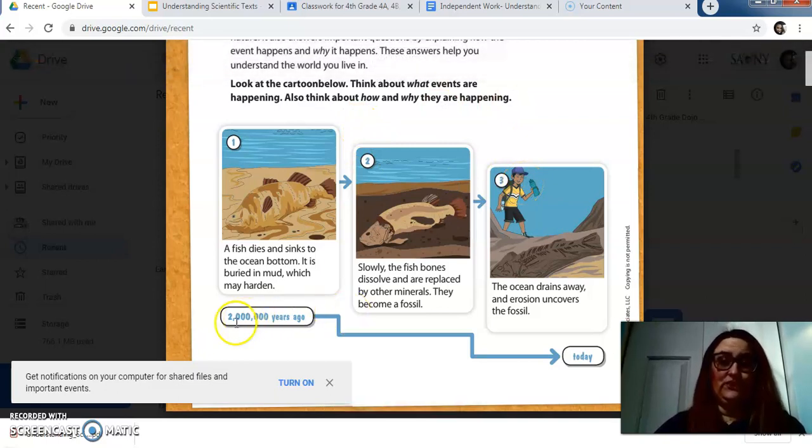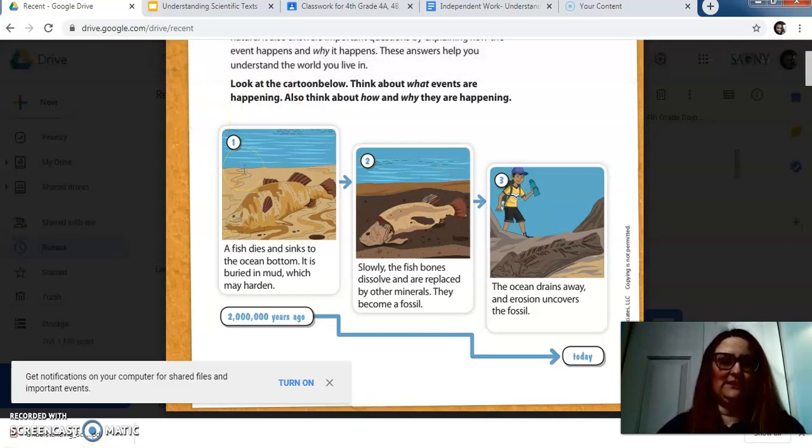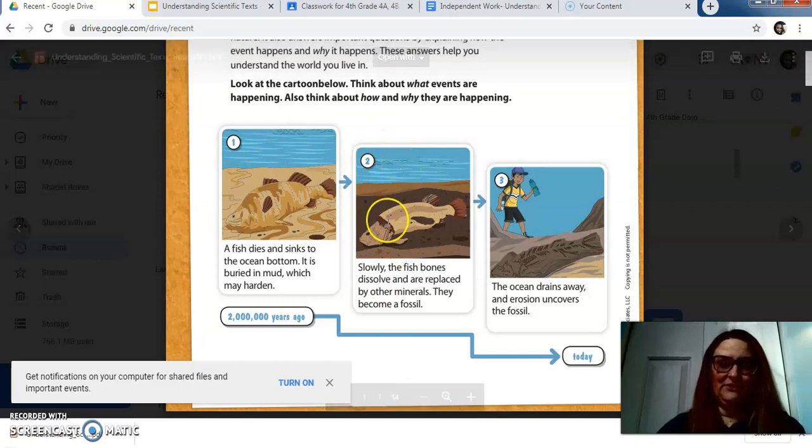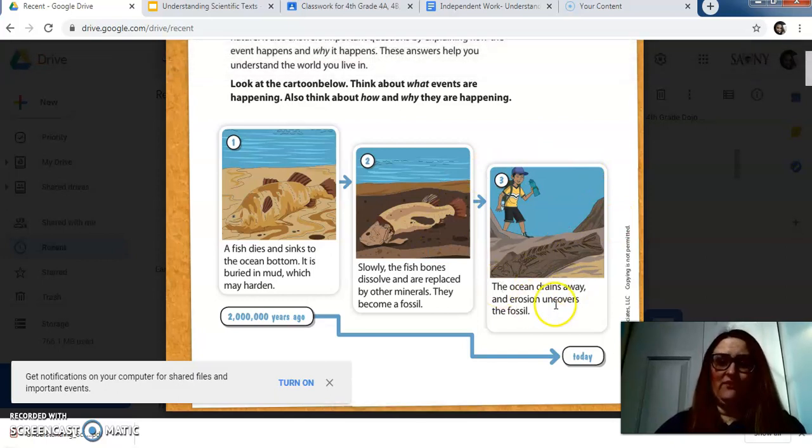This is two million years ago, which is crazy, and this is today. So we can see we're moving through a sequence in time and order of events that they happen. In the first, it says a fish dies and sinks to the ocean bottom. It is buried in the mud, which may harden. Then, step two, it's not really a step two, but event two. Slowly the fish bones dissolve and are replaced by other minerals. They become a fossil. And the third event, the ocean drains away and erosion uncovers the fossil.